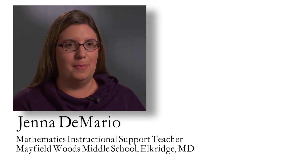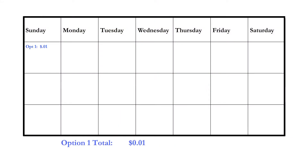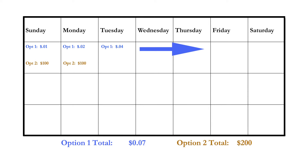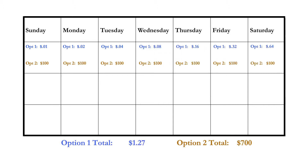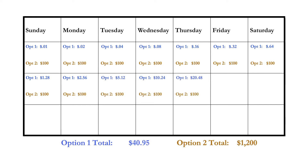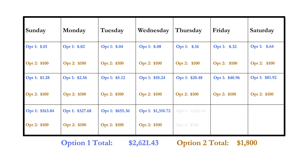One example I use with students when looking at exponential functions is offering them an amount of money they would get paid every day and asking them to compare two options. Option one: I'll pay you a penny today, two cents tomorrow, doubling each day forward. Option two: I'll pay you $100 today and an additional $100 each day thereafter. Most students choose the $100 a day, but when you look at the exponential growth of the other option, students are blown away by how quickly that penny turns into a lot of money.